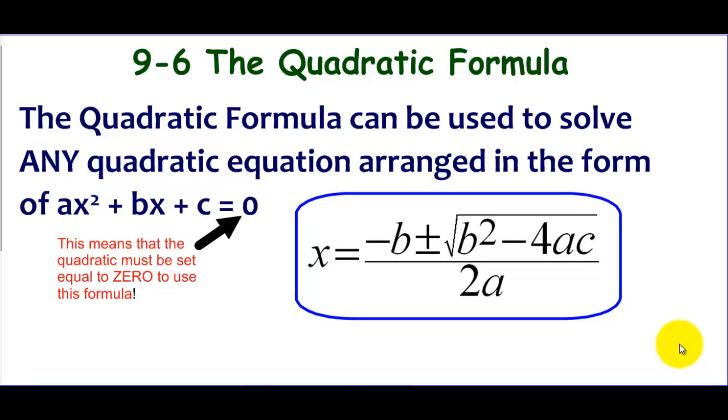We have the square root method available, but that only works when that middle bx term is missing. We also have the factoring method, but not everything's factorable. It could have some strange decimals or fractions in it and they're not easily factorable.